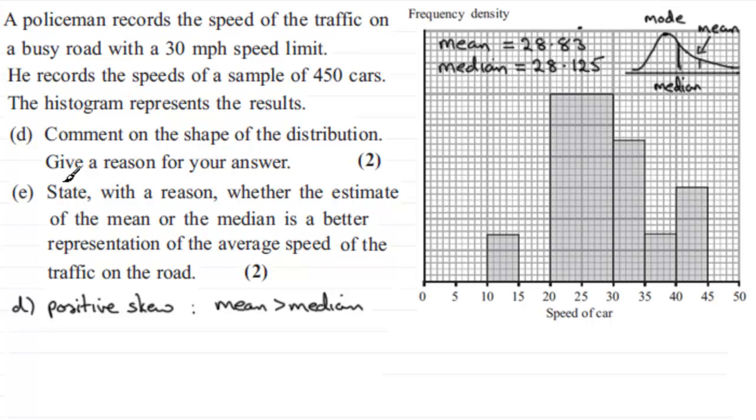Now in Part E it says, state with a reason whether the estimate of the mean or the median is a better representation of the average speed of the traffic on the road.